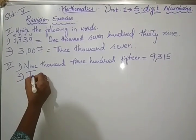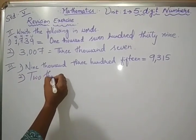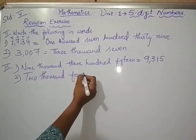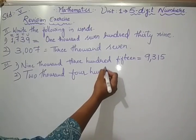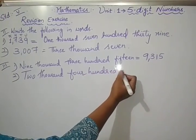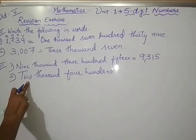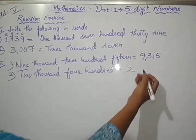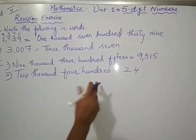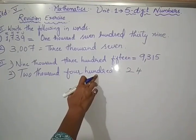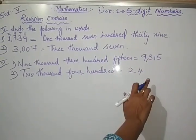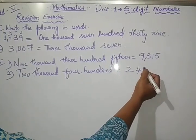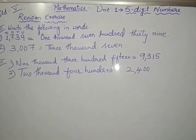Second one, 2,400 can be written as, how many thousands, 2,000, how many hundreds, 400. Only thousands, hundreds, no tens, no unit. So write down 0, 0, that's 2,400.